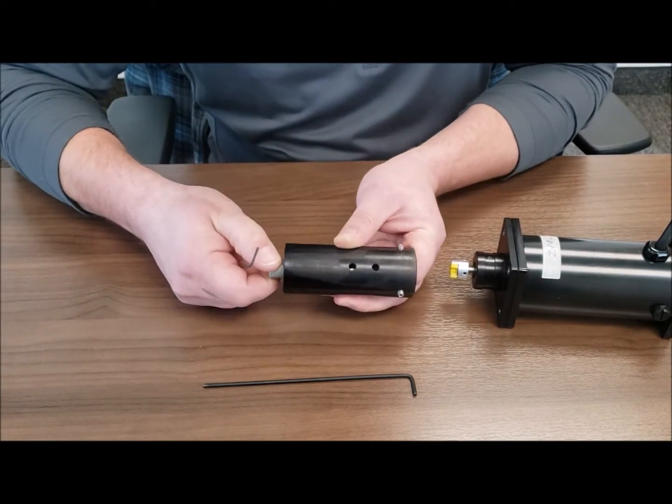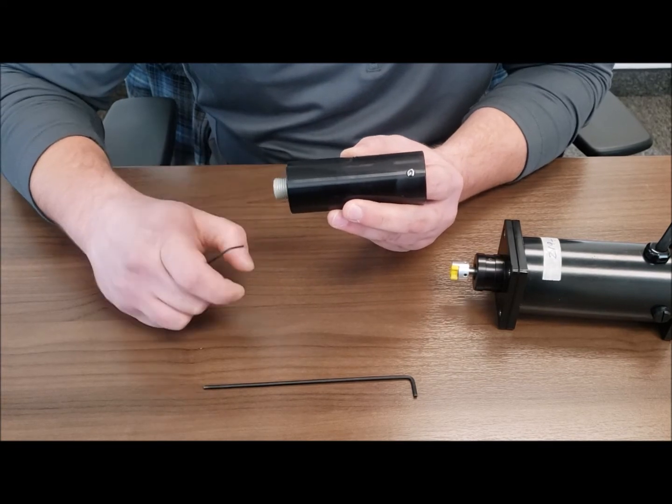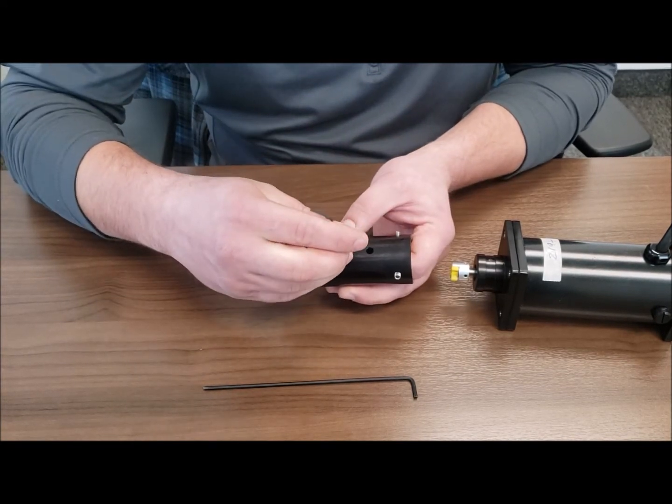Then rotate it 90 degrees so that you can see the second screw and tighten that down.